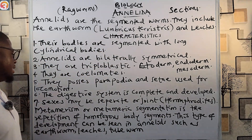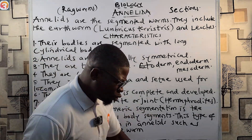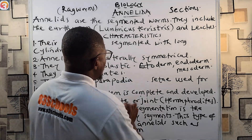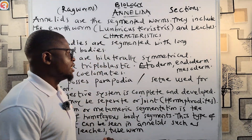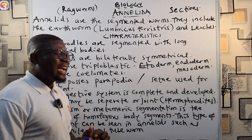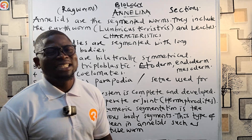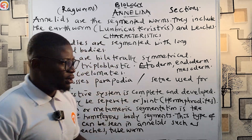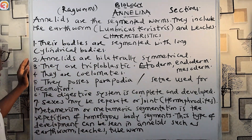They are coelomates, meaning they have a true body cavity — not a false body cavity. They also possess parapodya and setae used for locomotion, to move from one place to another. Their digestive system is complete and well-developed.